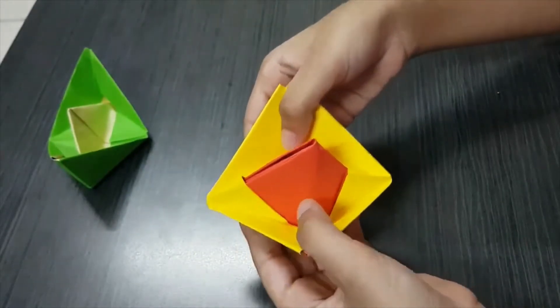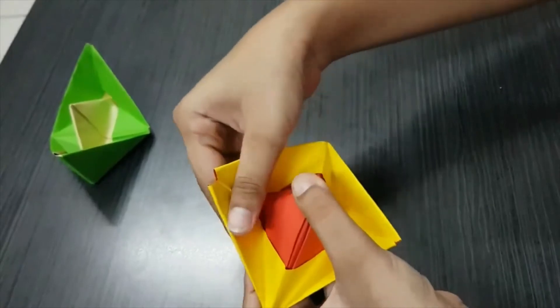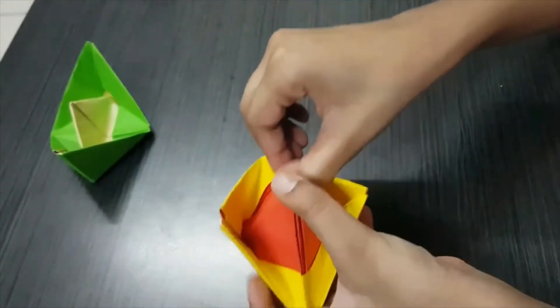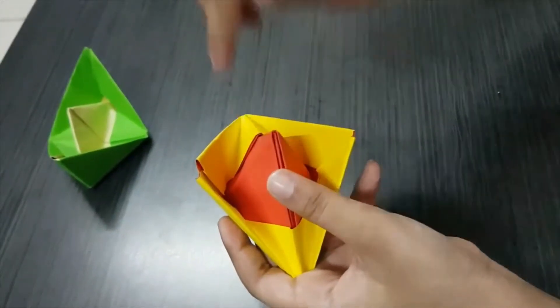Now open it from this area. Now you'll see it has formed something like this. Now you can see there's like a small pocket thing here. Insert this part into there.